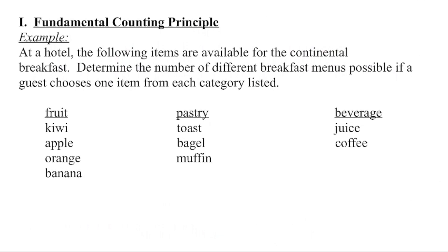Let's say that we are at a hotel where a continental breakfast is being served. You have a choice of four pieces of fruit, three different pastries, or two different beverages. If you have to choose one item from each of the three categories, what possible combinations could you come up with for your breakfast menu, assuming that each piece of fruit goes with each pastry and each beverage?